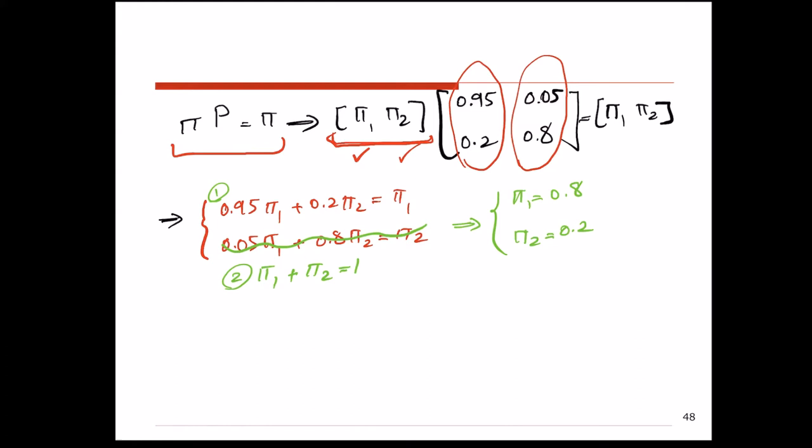With this new transition probability matrix obtained if we perform the advertisement, in the long run when the system reaches steady-state, if we pick any random person from the population, there is an 80% chance they are drinking cola 1 and a 20% chance they are drinking cola 2. In other words, cola 1 has 80% market share and cola 2 has 20% market share.